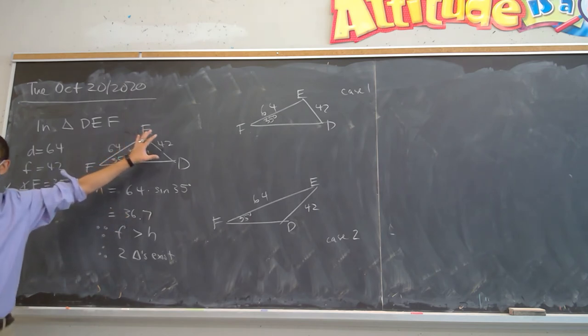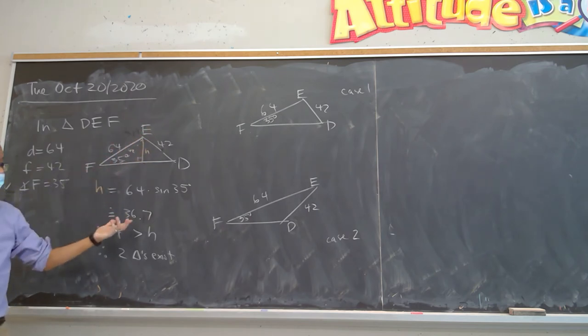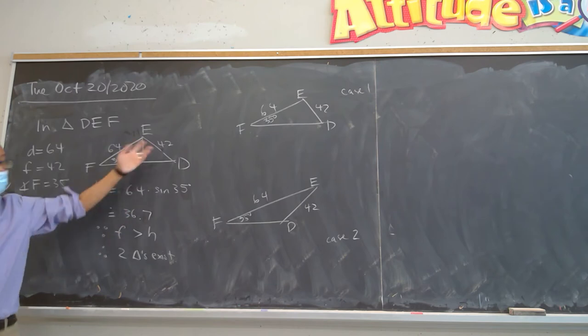And it's clear that it's not 42, so it's not a right triangle. Everyone see that? Everyone okay?